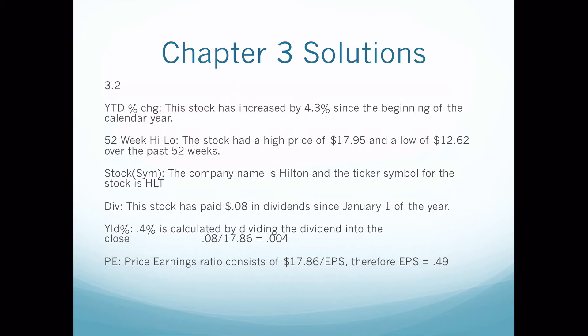We multiply that number by a thousand because the par value is a thousand, and it's estimated that five hundred thirty-one thousand six hundred dollars was traded the last trading day. For problem 3-2, when you're looking at both the stock and the bond, make sure you do the same as I've shown. One or both of these will be on the test. The first question: the stock has increased by 4.3% since the beginning of the calendar year — not 'since last year,' which could be a 52-week year, calendar year, or fiscal year.